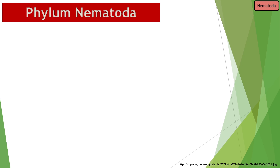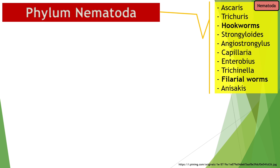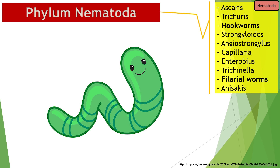Phylum Nematoda houses parasites more commonly referred to as roundworms. The prototype roundworm is the ever-famous Ascaris, while other roundworms include other soil-transmitted helminths, some food-borne roundworms, and even some vector-borne filarial worms. Being roundworms, parasites belonging to this phylum look like your prototypical worm — long, cylindrical, noodle- or thread-like organisms. Size-wise, they may range from the microscopic to the length of a typical pencil.